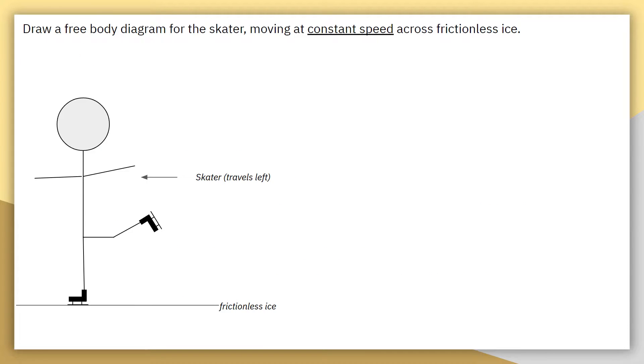The first example we're going to be looking at is this one. Draw a free body diagram for the skater moving at constant speed across frictionless ice. So we are already given a picture of a skater traveling to the left on top of frictionless ice. So we don't need to do step zero because it's already been drawn for us.